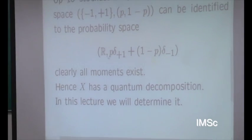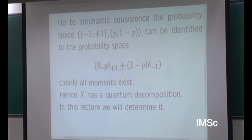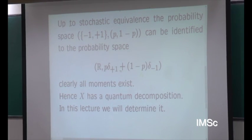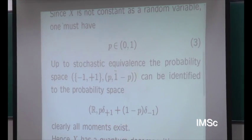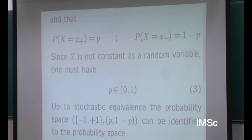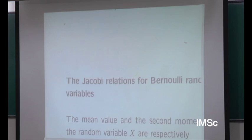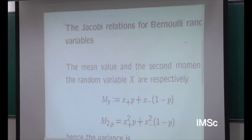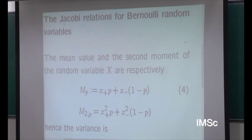To connect with yesterday's talk, in which we were speaking of measures on the real line, the measure of the real line we are now considering is a convex combination of two delta measures. So we have a Bernoulli process characterized by three parameters: the values X plus with probability P, and X minus with probability one minus P. The first thing we want to do is deduce the Jacobi relations for these Bernoulli random variables.